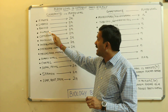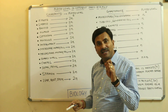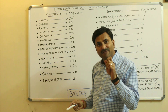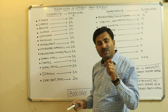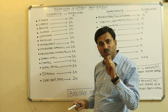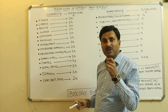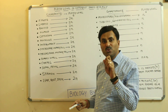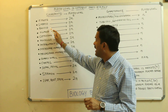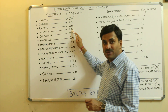Now, radicle and plumule. We know that radicle and plumule respectively give rise to the root and the shoot — radicle gives rise to root and plumule gives rise to shoot. Root and shoot are diploid structures, and so radicle and plumule are also diploid structures.